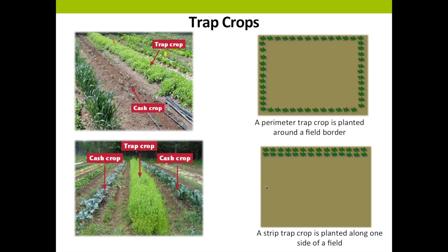The shape of a trap crop can influence pest control. A perimeter trap crop creates a border or barrier that can prevent pest insects from moving further into the crop. Another version is a strip trap crop planted along one side of the field. Two pictures from actual farms show mustard used as a trap crop — one with mustard flanked on both sides by broccoli, and another with a trap crop next to one row of the cash crop.